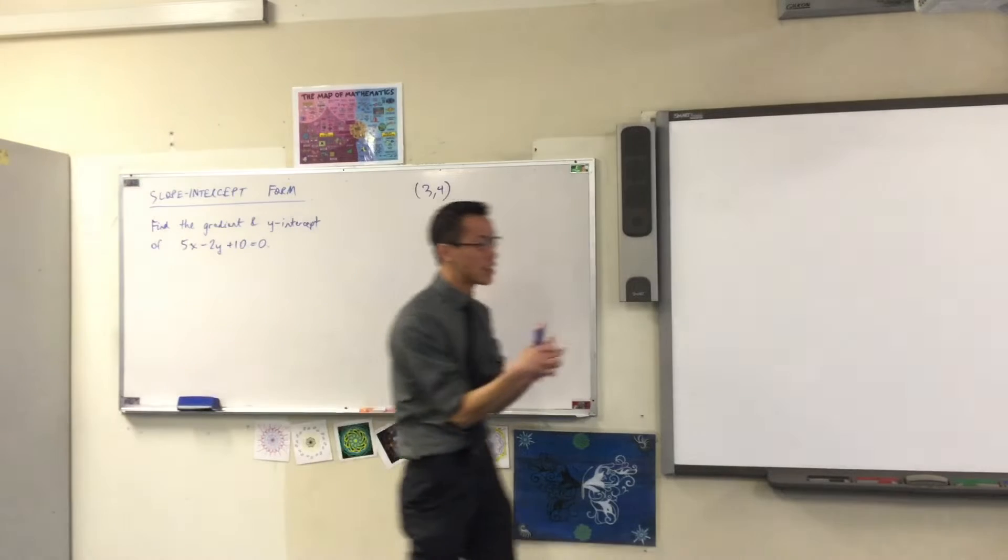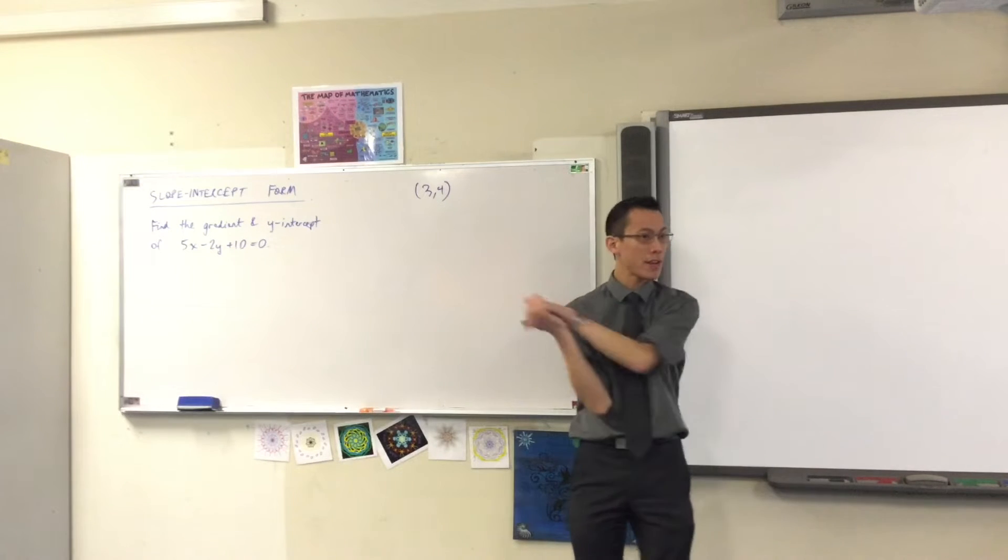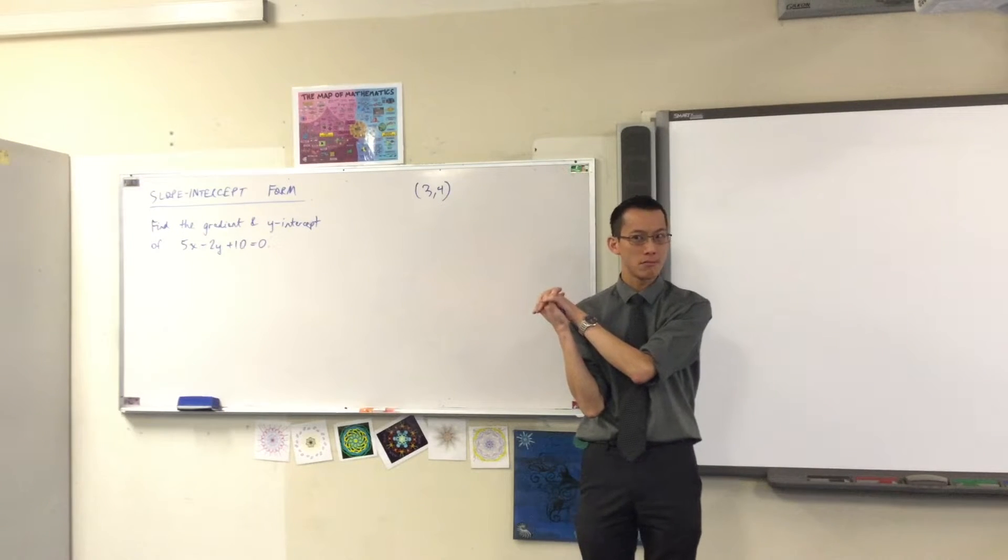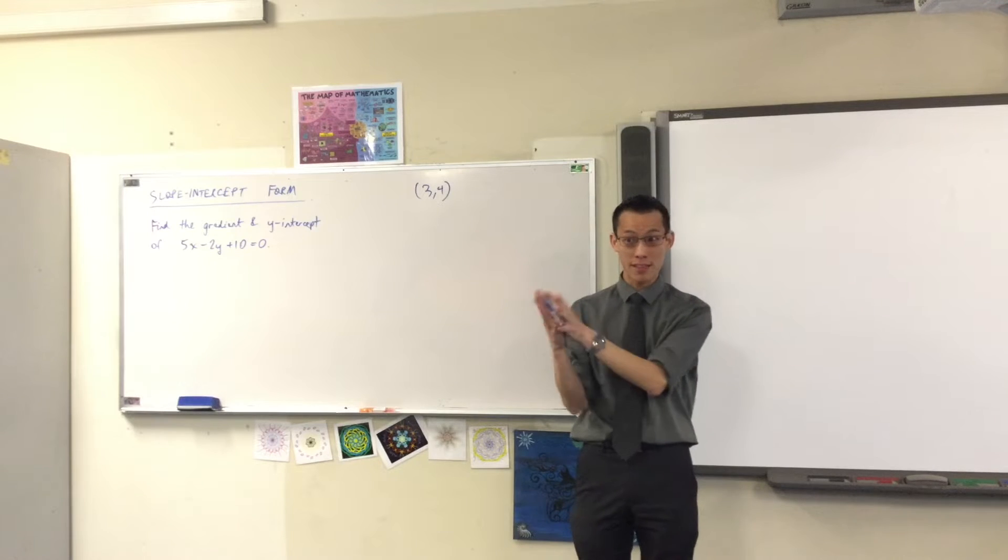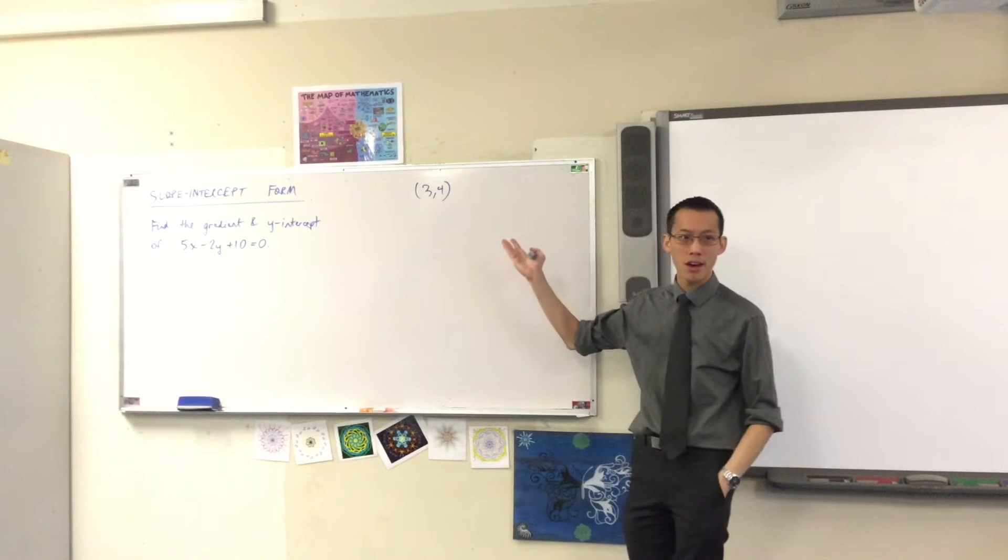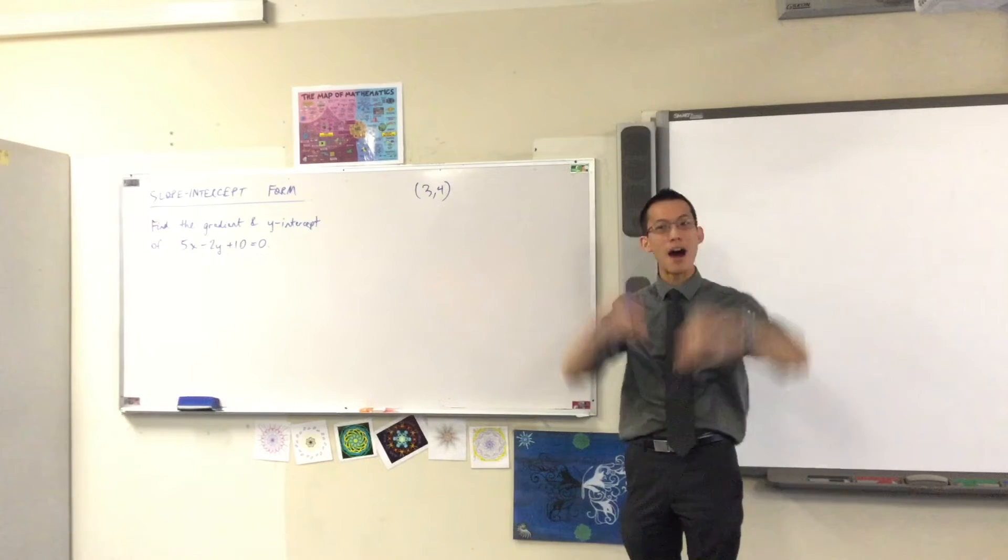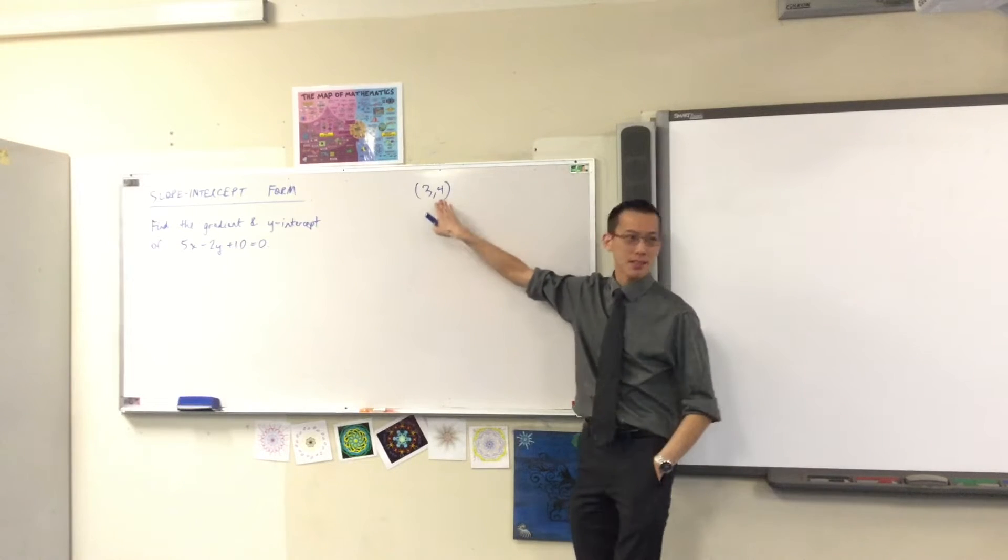You've got two things that have to come together. The three in this case would be the x-value, that's where you are horizontally, which makes the four the y-value, which is where you are vertically. Points, coordinates.